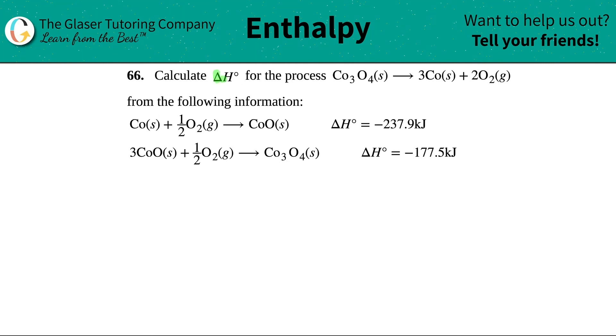Number 66. Calculate the delta H for the process and then they give us this equation. So we need to find the delta H for Co3O4, which will yield 3Co and 2O2, from the following information. And they give us two equations with delta H values.